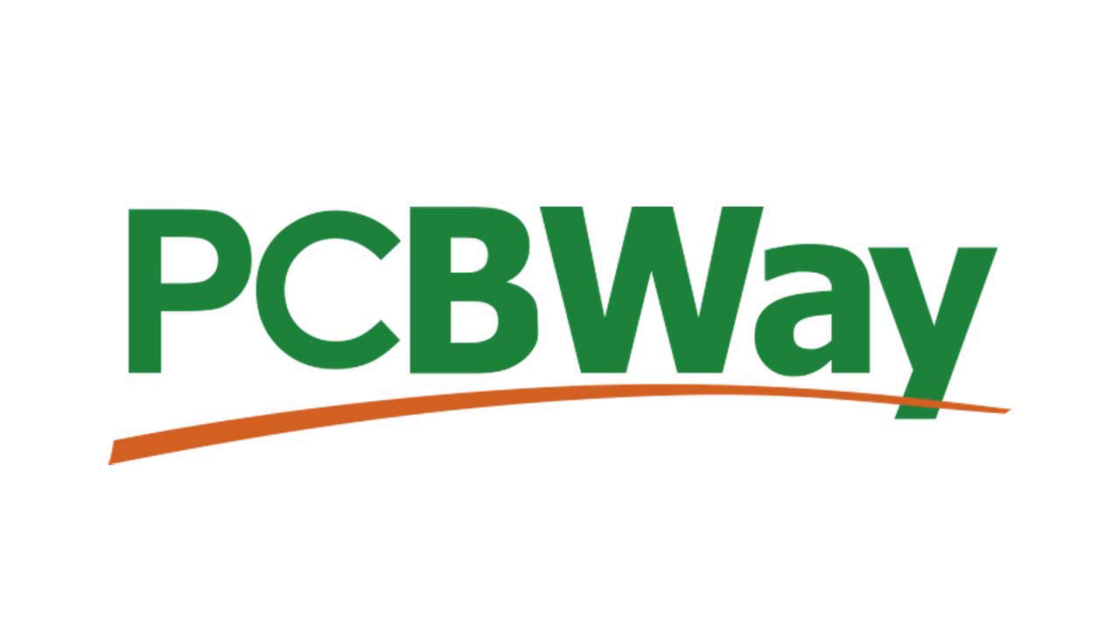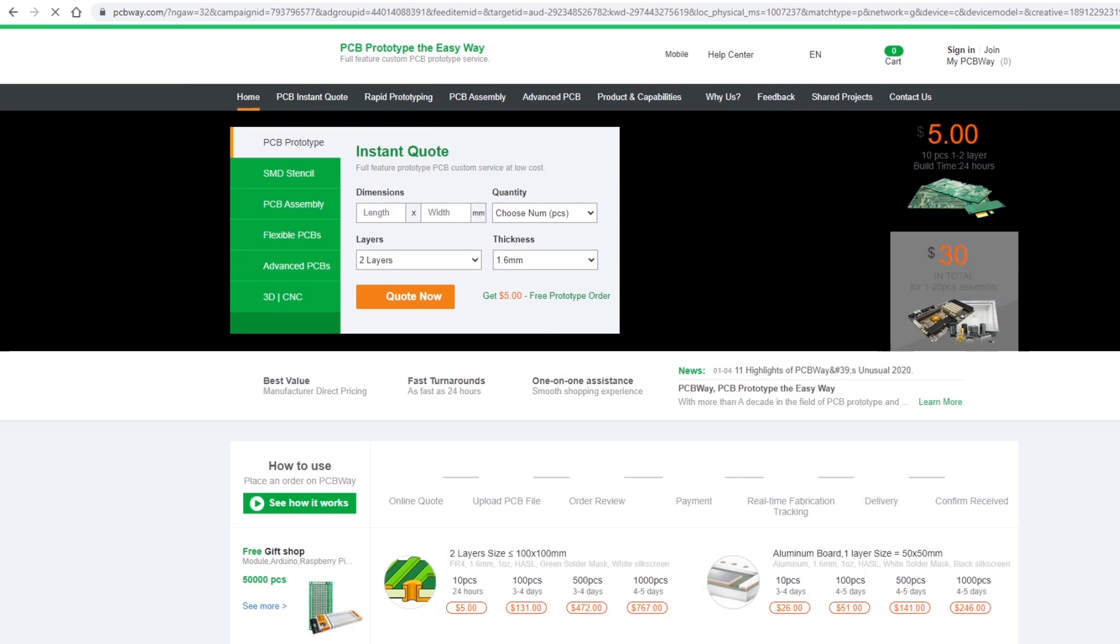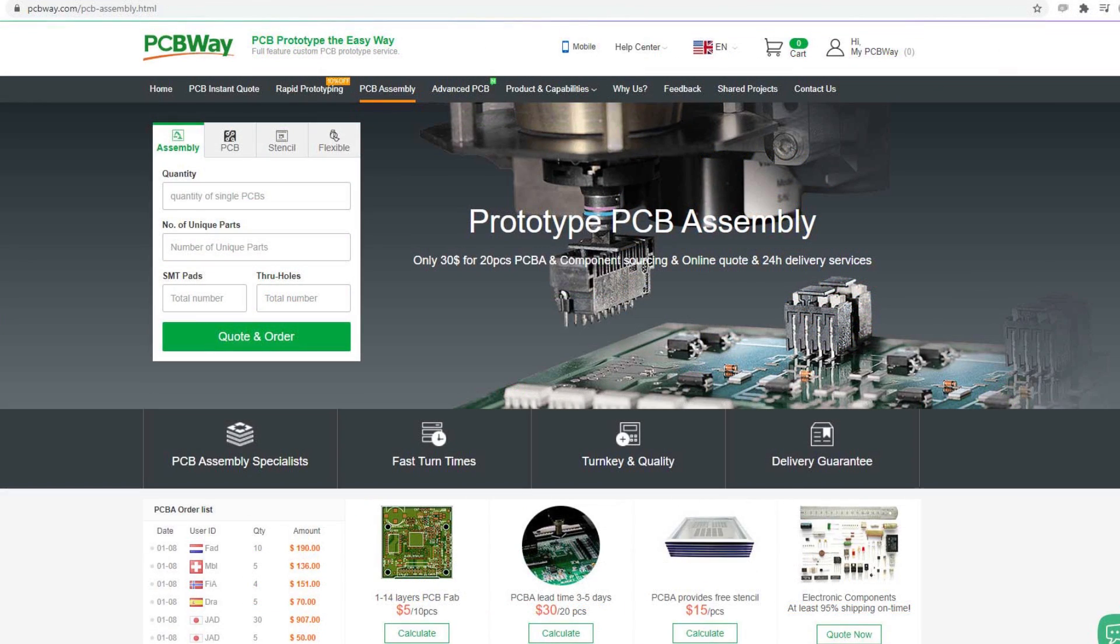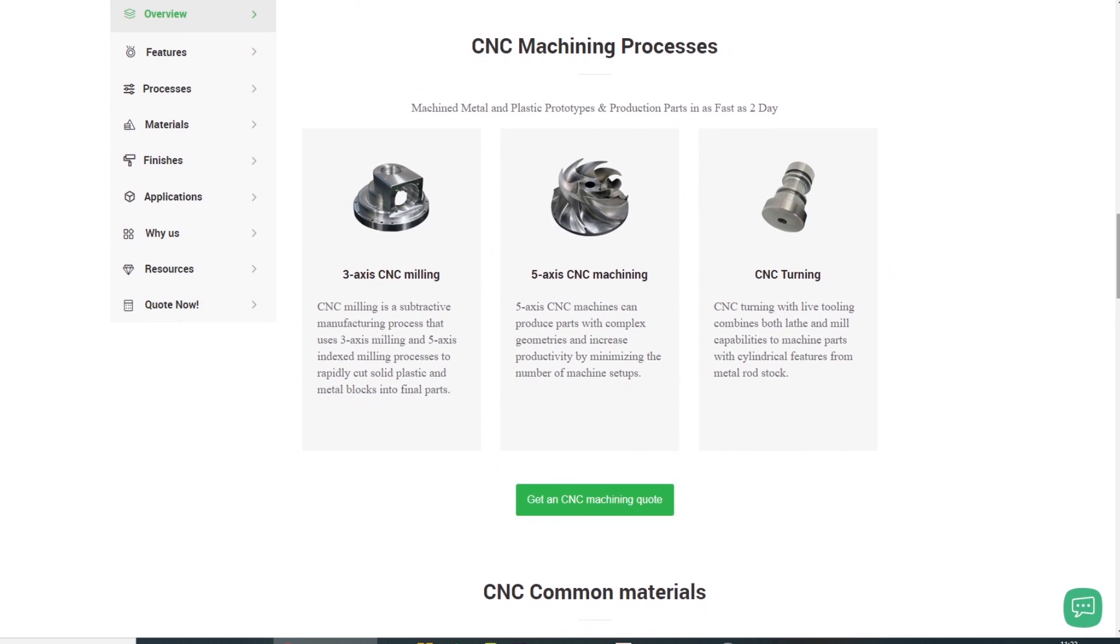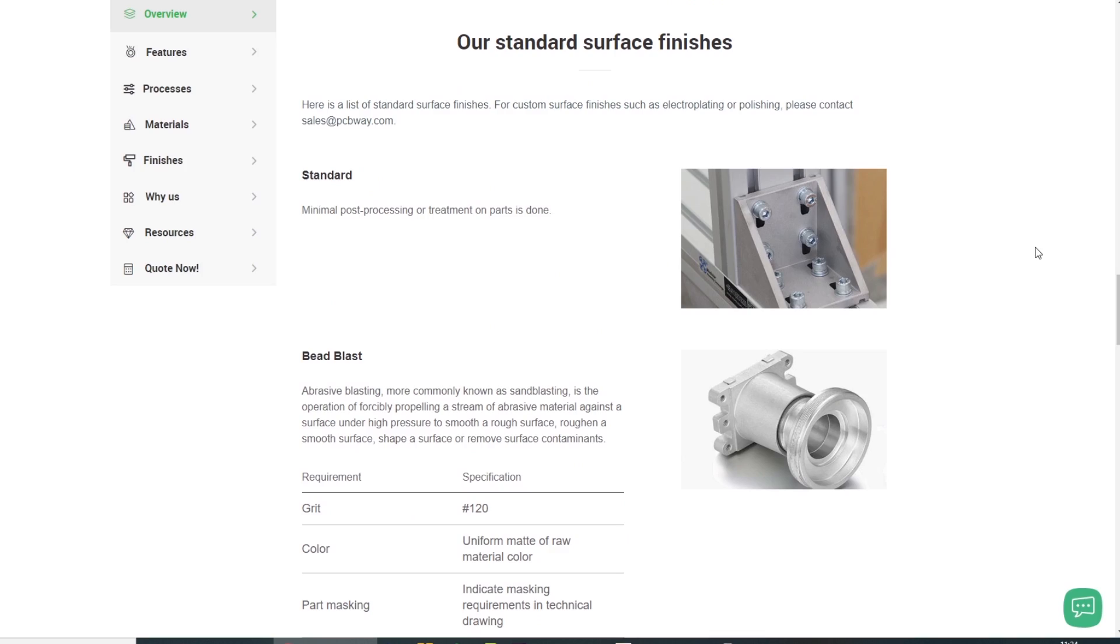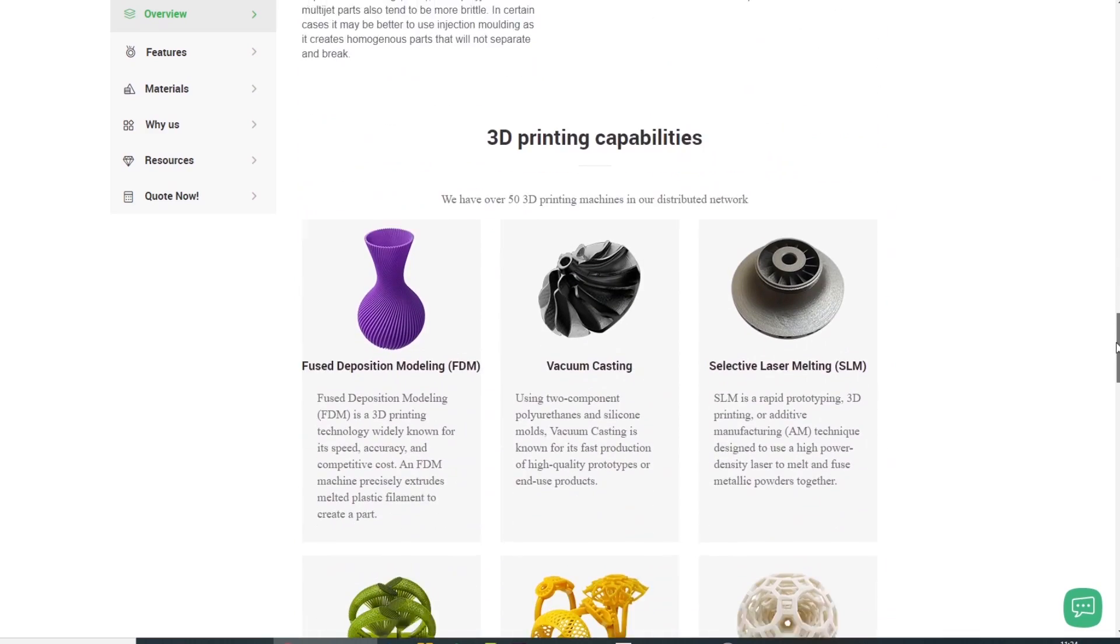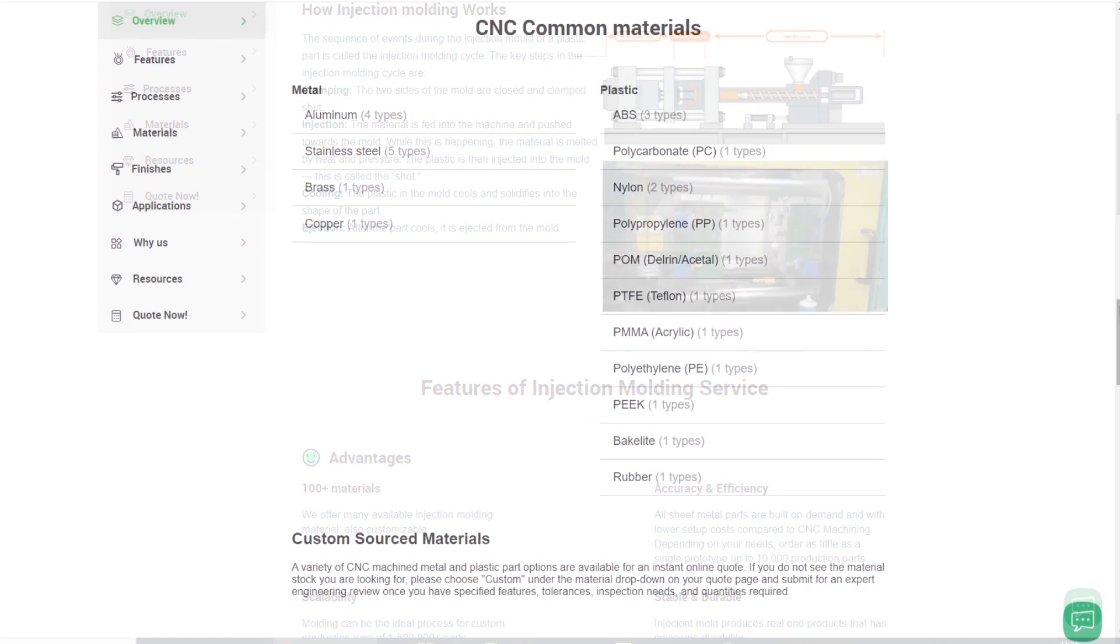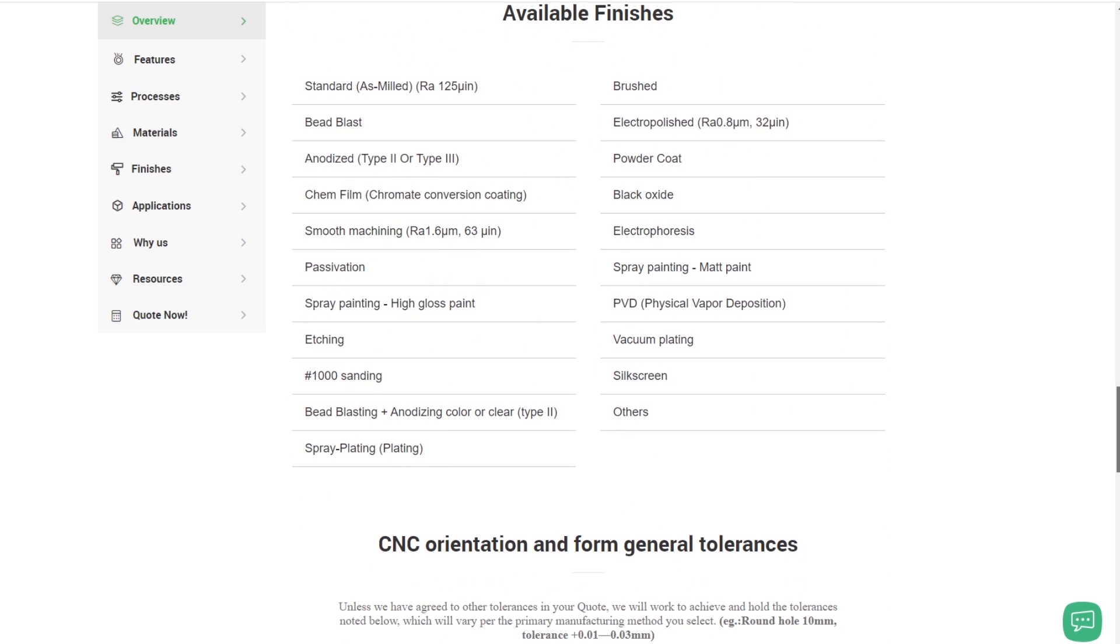But before we look at that it's time for a quick ad from the video's sponsor which is PCBWay. PCBWay provide both PCB manufacture and PCB assembly under the same roof so you can get them to solder the components onto your PCB as well as make the board. And they'll do surface mount and through hole assembly. PCBWay have also launched new CNC services including online CNC machining, sheet metal fabrication, 3D printing and injection molding.